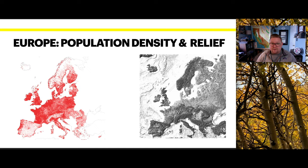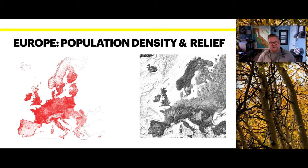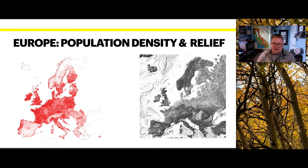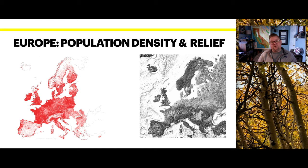Looking at a couple other images of Europe: on the left is a population density map in red, where each dot represents a specific volume of population. On the right is a raised relief map using texture to show three dimensions. We notice correlations — in very mountainous areas, populations tend not to reside. There's also a correlation between where populations live, climate, and major waterways for trade and transport.